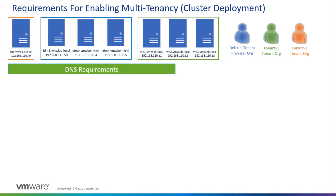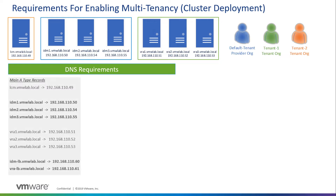Let's take a look at the DNS requirements for all seven appliances, including the records needed for multi-tenancy. The main A-type records for all seven appliances will be created: one for LCM, three for the IDM appliances, and three for the VRA appliances, all pointing to their respective IP addresses. In addition, we create two more records: one for the IDM load balancer fronting the three IDM appliances, and one VRA load balancer fronting all three VRA appliances.